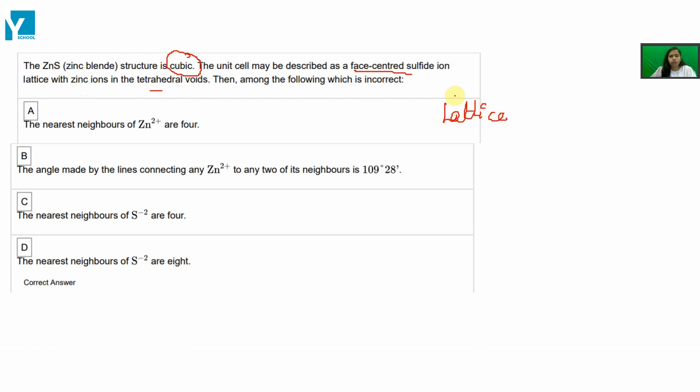Lattice points are occupied by sulfide ions and the zinc ions are present in tetrahedral voids. Which statement is wrong?